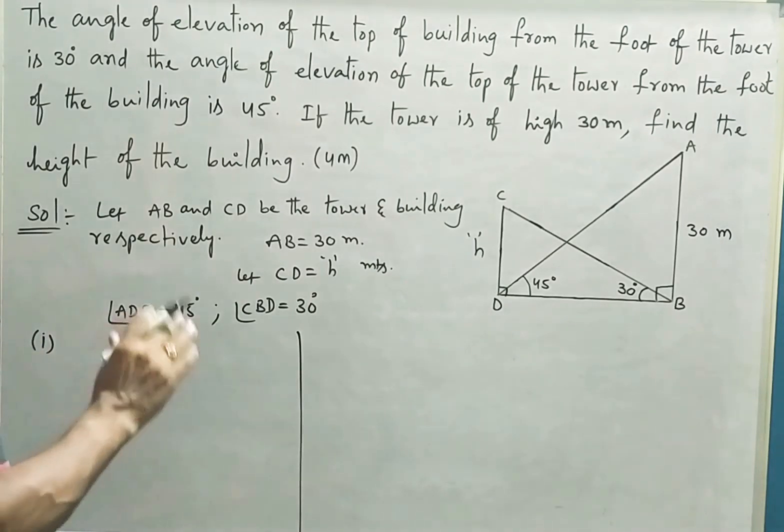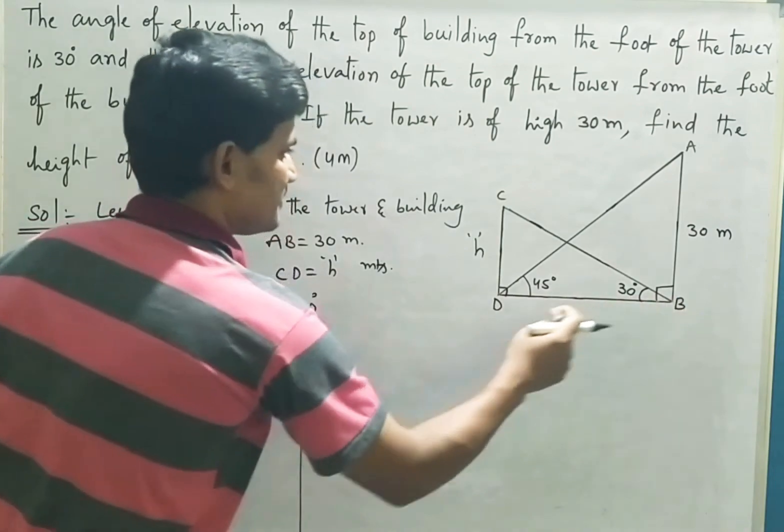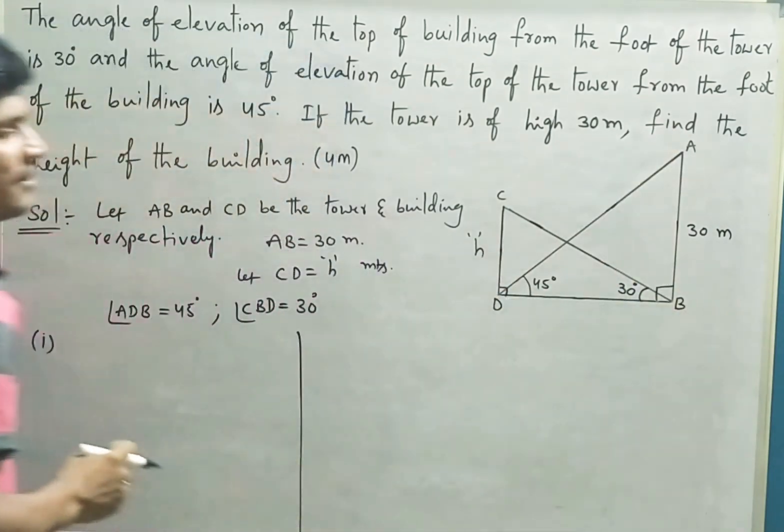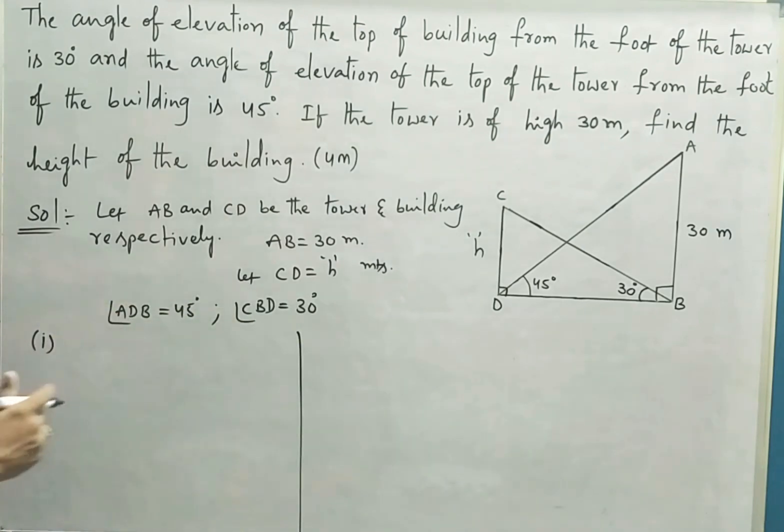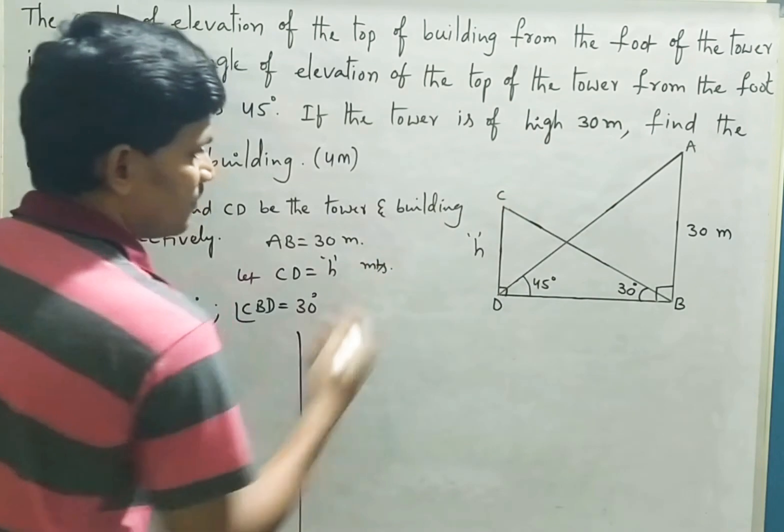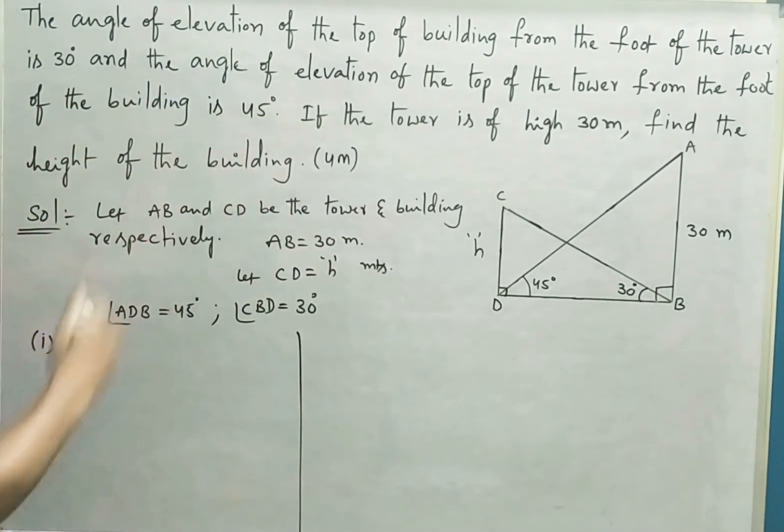We have two right triangles: one is the smaller one, that is CDB, another one is the bigger one, that is ABD. Let us take first known to unknown. We have a known value of 30 meters, that is the height of the tower. Let us take that one first.